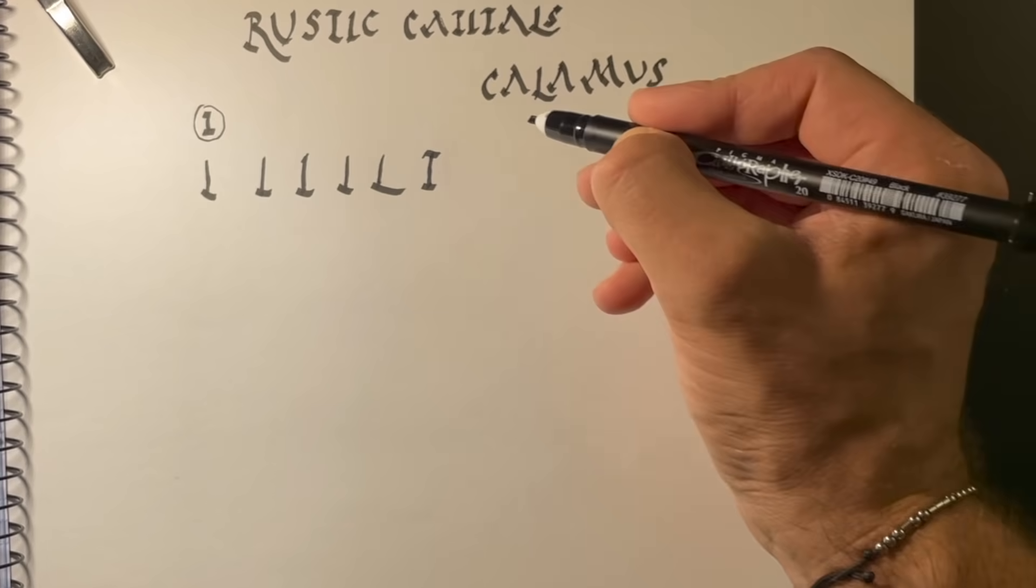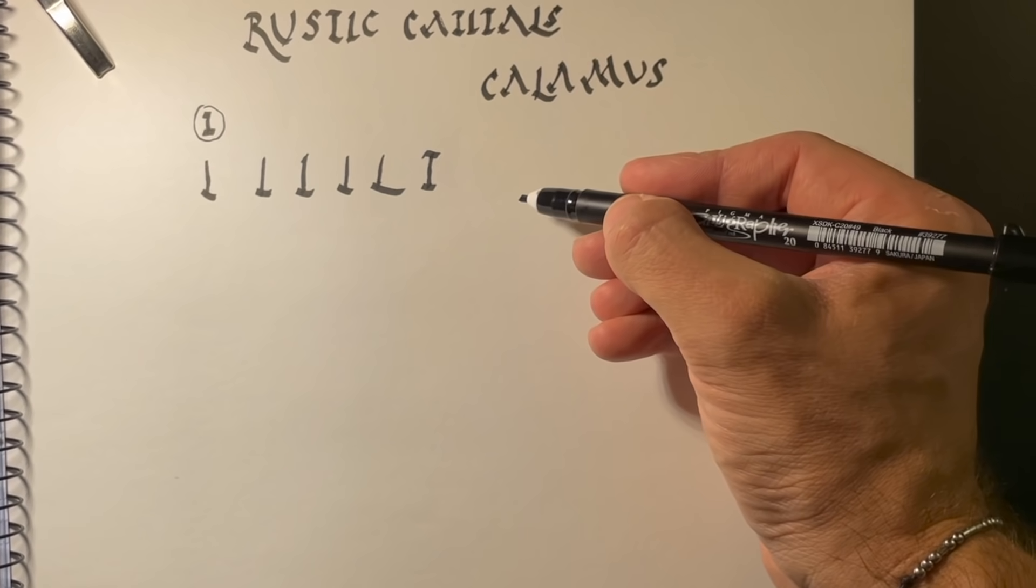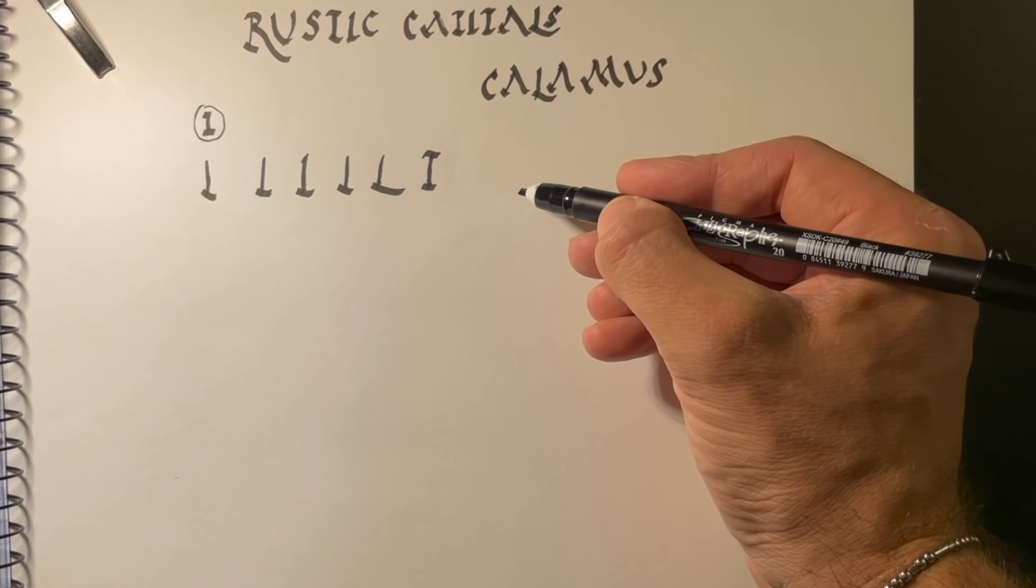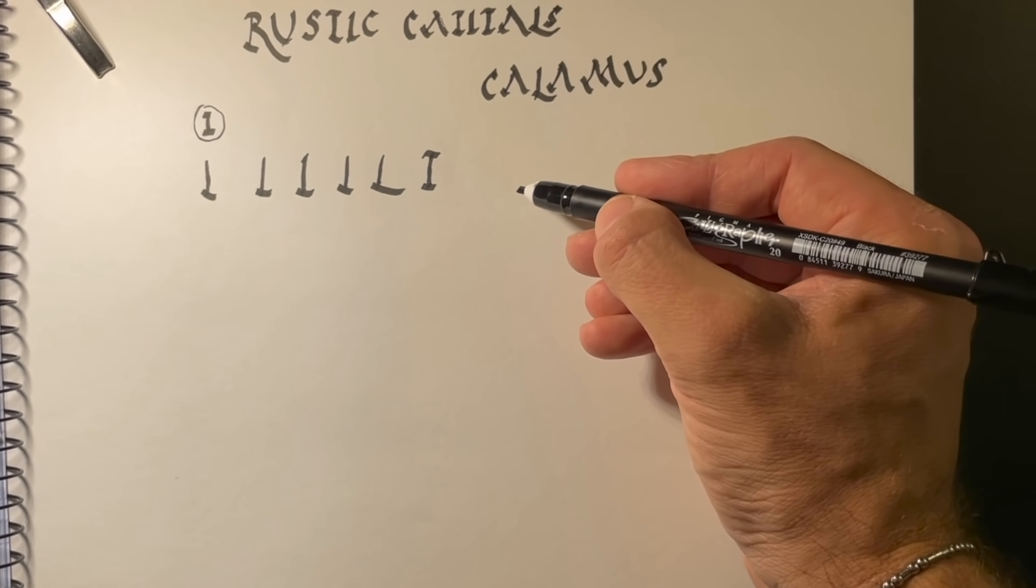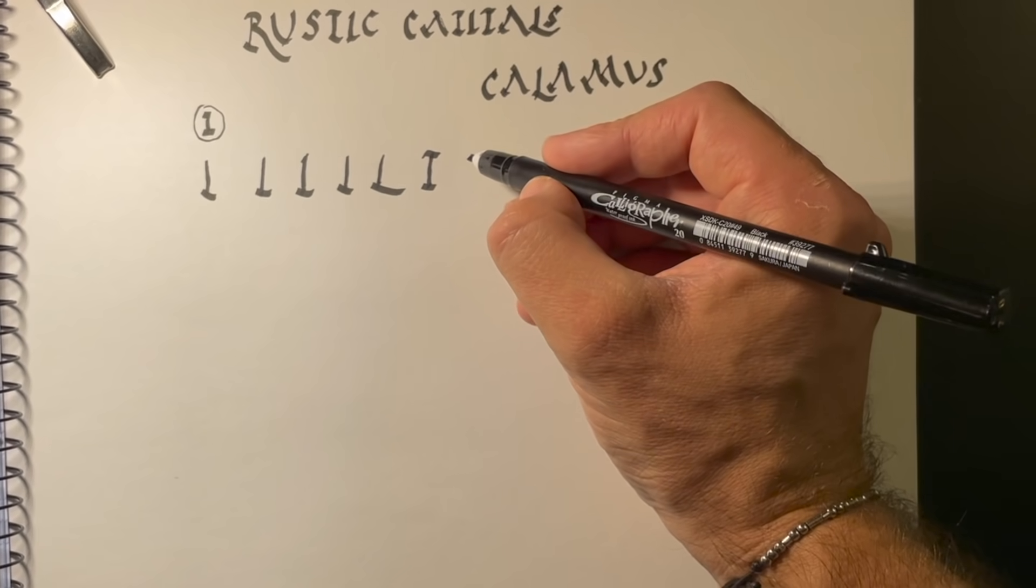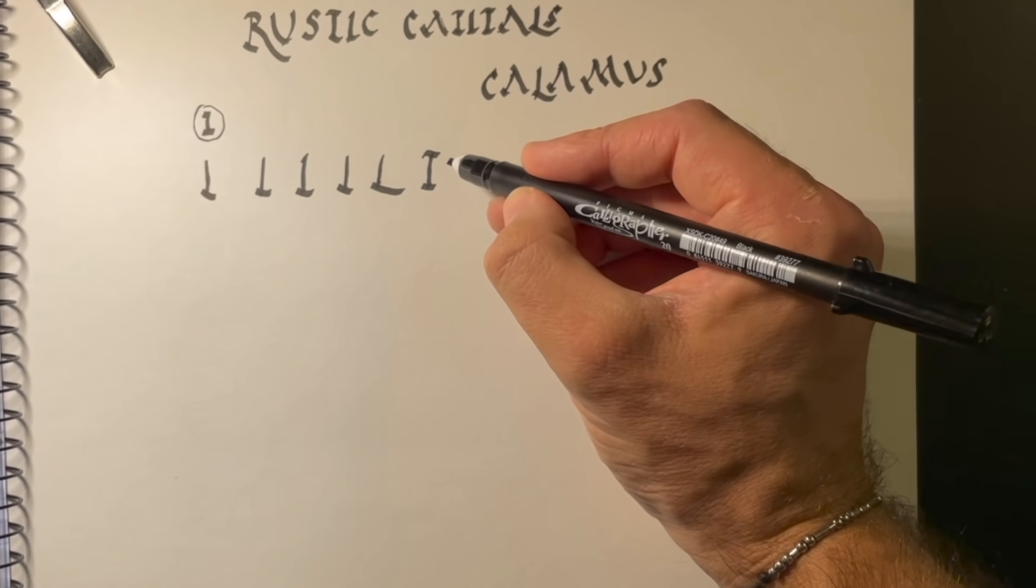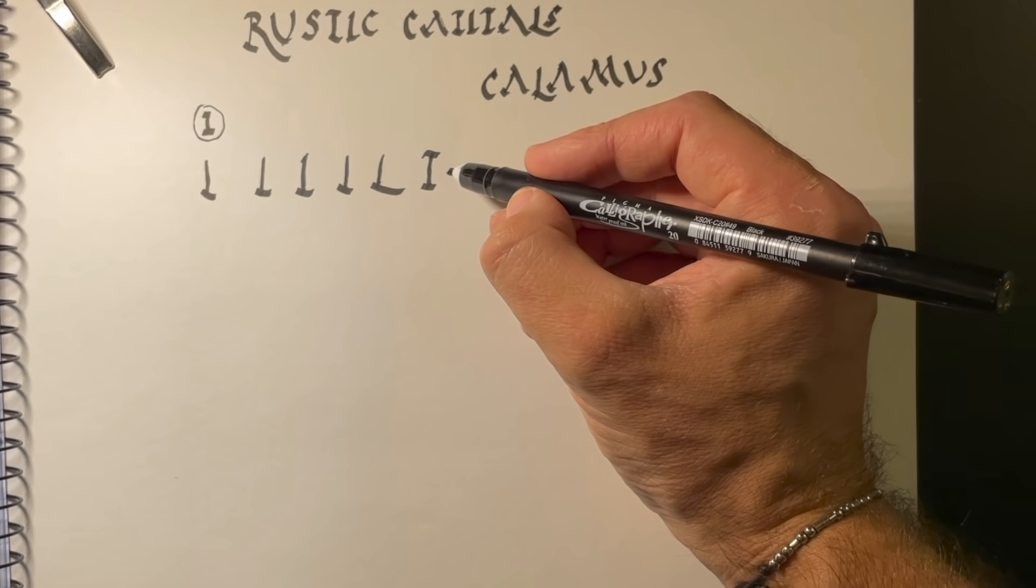So, this is a T. You might see it slightly longer, but not necessarily. One of the lovely features about these Roman rustic capitals is they can be very tall and very narrow, very kind of tall and elegant, which I like. Very thin looking.